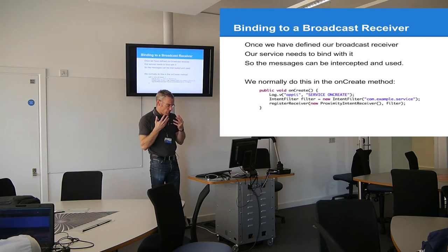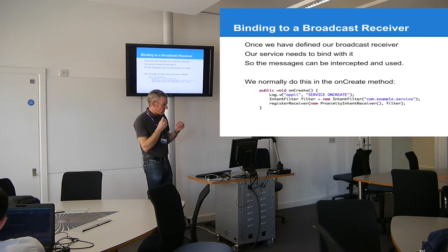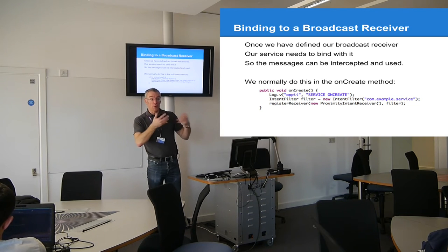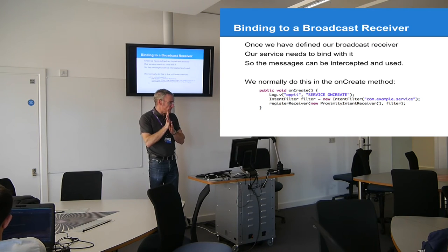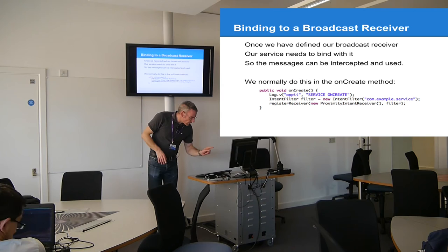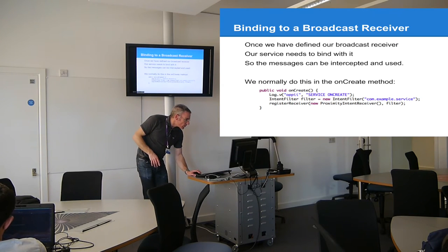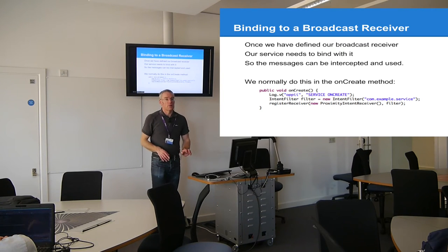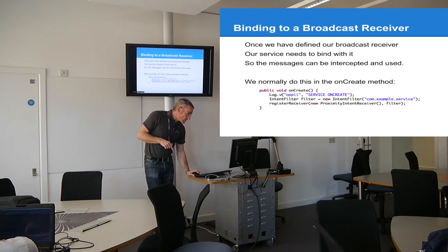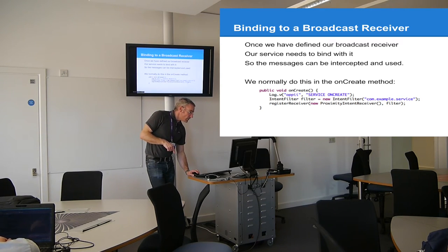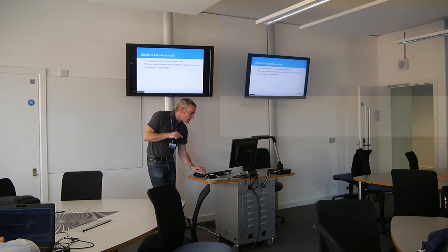We have to tune our receiver so it knows what it's supposed to be listening to. In the onCreate of our class, we use registerReceiver. You'll see 'com.example.service' — that's the package name, the reverse URL you put in when you created your application, and it identifies the running application. We create an IntentFilter for our application and then call registerReceiver, passing in a new receiver and the intent. Then we can go forward and look at the geofencing example.